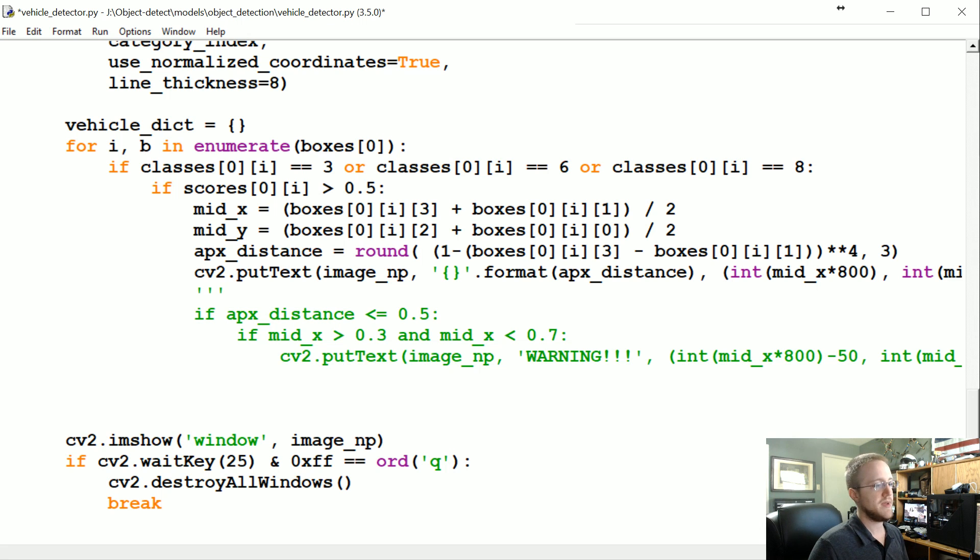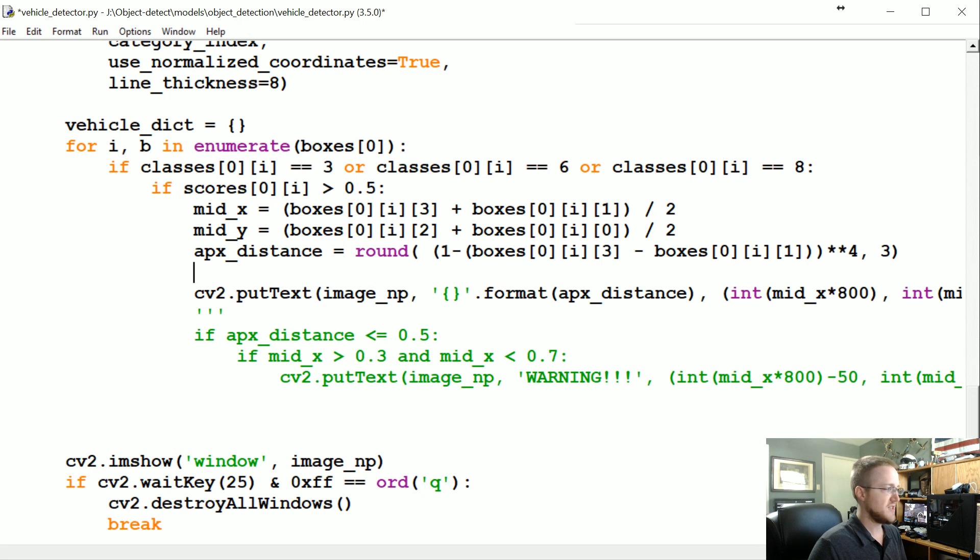We'll make that change and then now what we're going to do is basically just write under that somewhere, we're going to add that to the vehicle dictionary. So vehicle_dict, and then the key is just approximate distance, and then what we're going to say is that is equal to the mid x, mid y, and then scores[i].